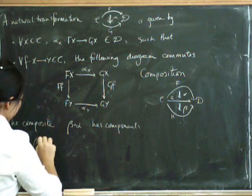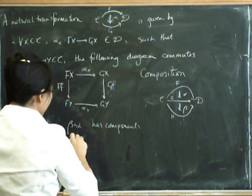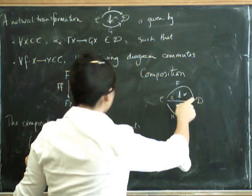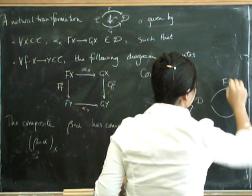So we've got to have a component at X that goes from, it goes from, well, this is a source, okay, beta composed with alpha is going to go from F to H.